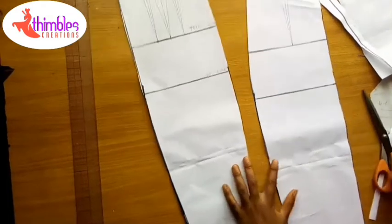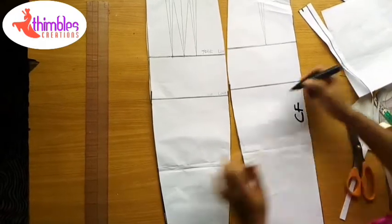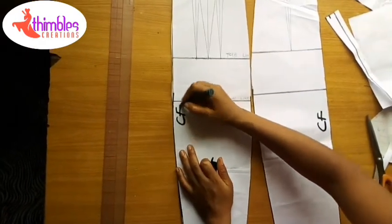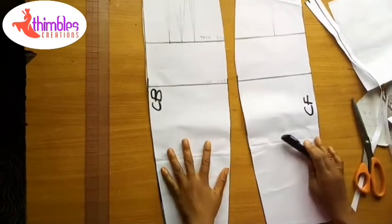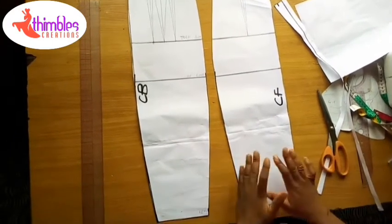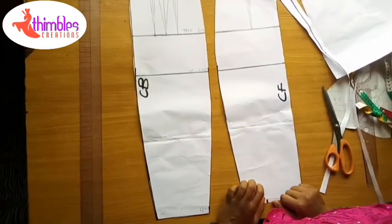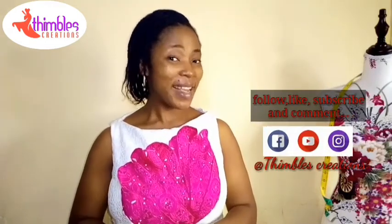The pattern is ready. This is center front and this is center back. The pattern is ready, so this is what your pencil skirt looks like. You can try this out and let's see what you've got. That's the end of the class and I hope you enjoyed it. Do well to subscribe to our YouTube channel at Thimbles Creations, follow us on Facebook and on Instagram at Thimbles Creations. Thank you for watching.